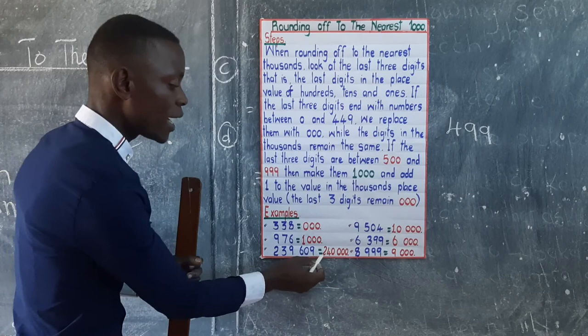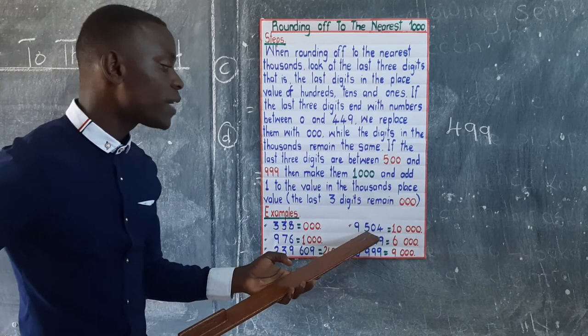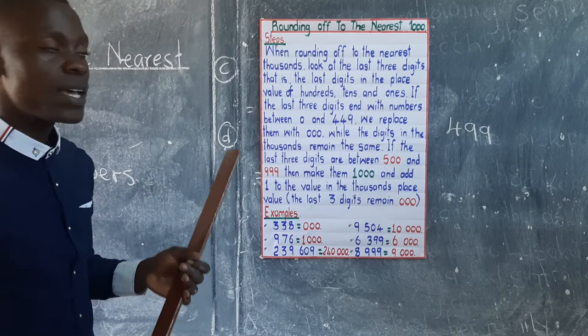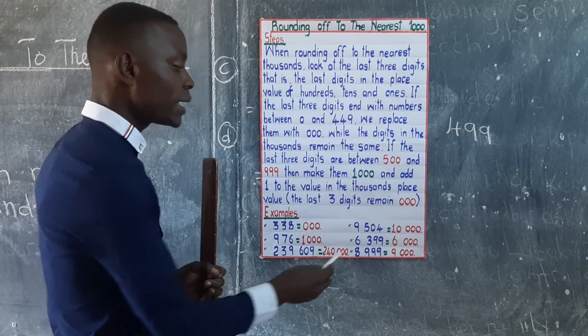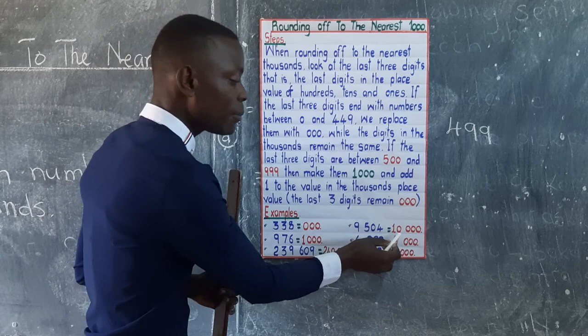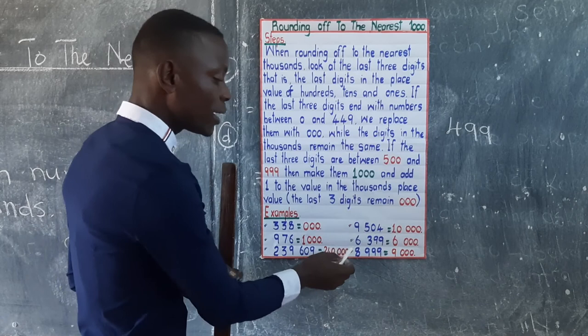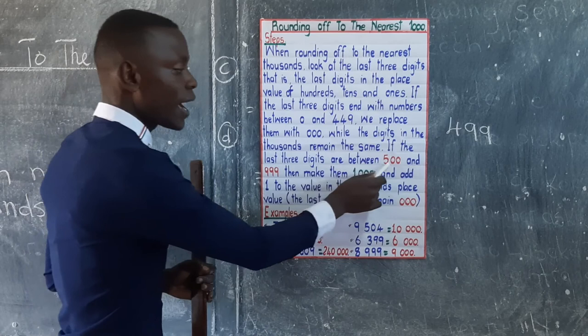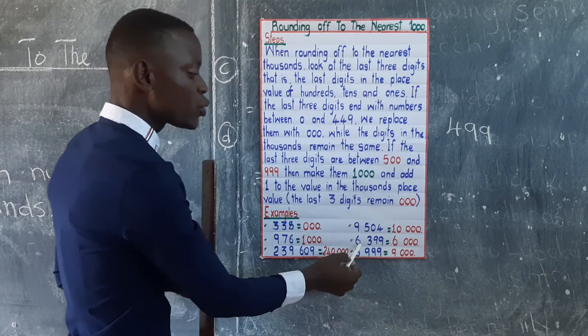Another example: 9,504. We ask: is 504 more than 500 or less than 500? It is 500 or more, so value is 1,000. Write 0 on 4, 0 on 0, 0 on 5, and add 1 to 9, which gives 10. We write the whole number 10 since there are no more digits. For 6,399, the last three digits are 399, which is less than 500. The value is 000 and we maintain 6, so 6,399 rounds to 6,000.